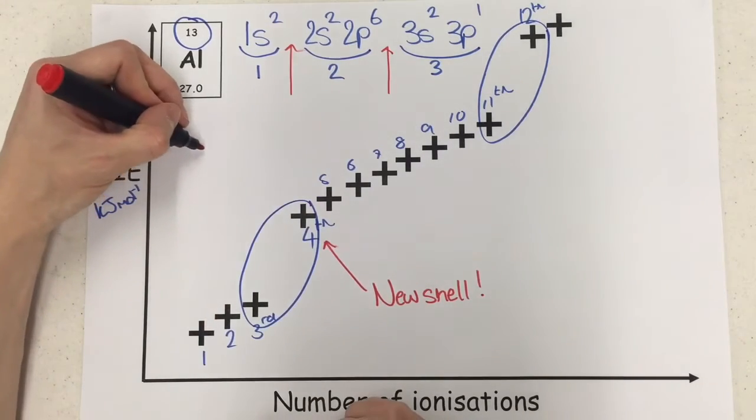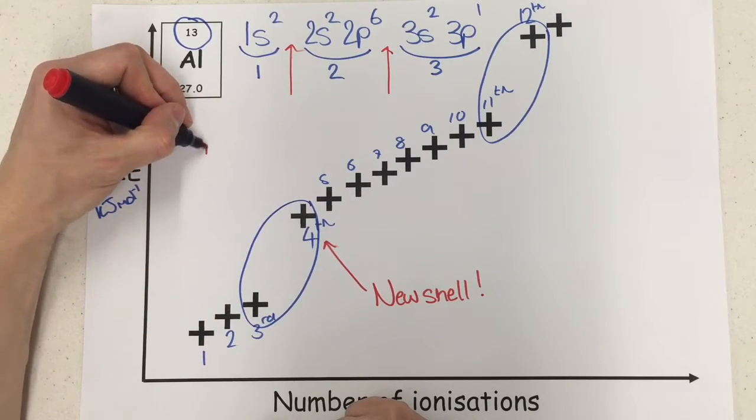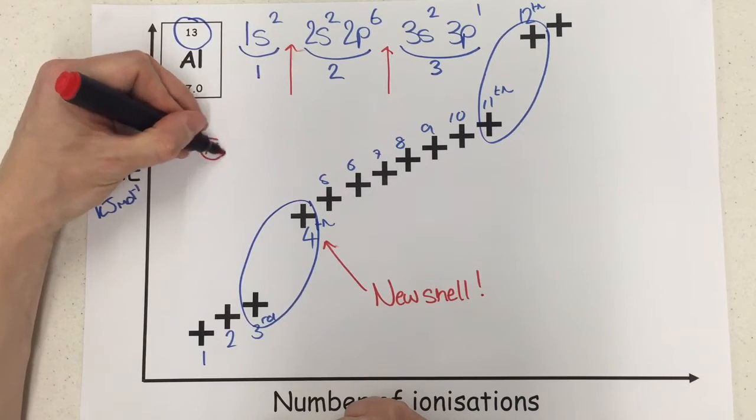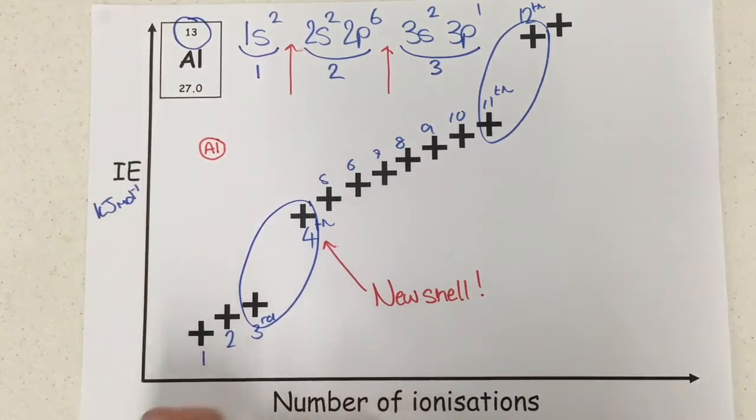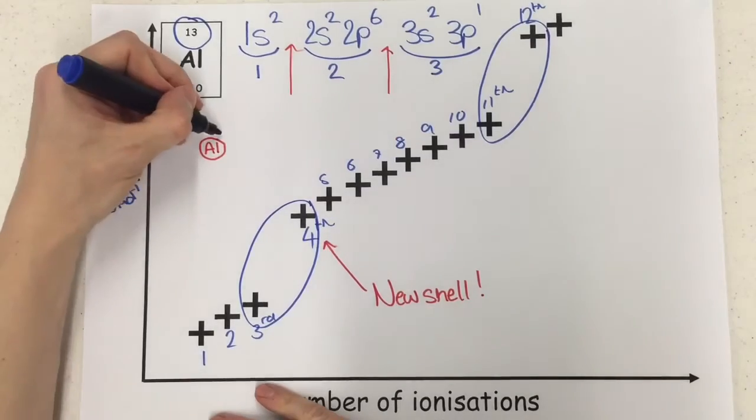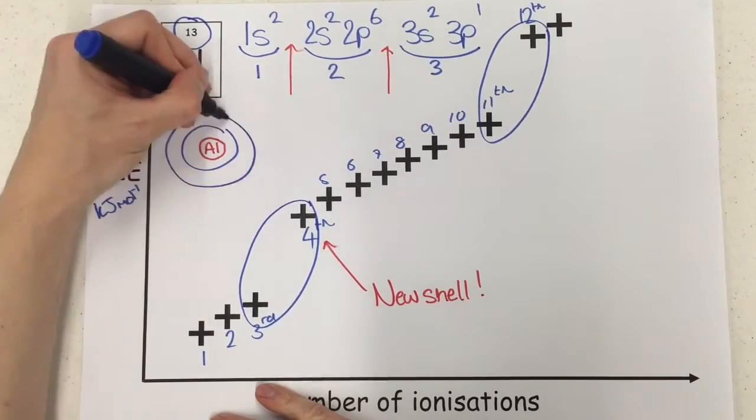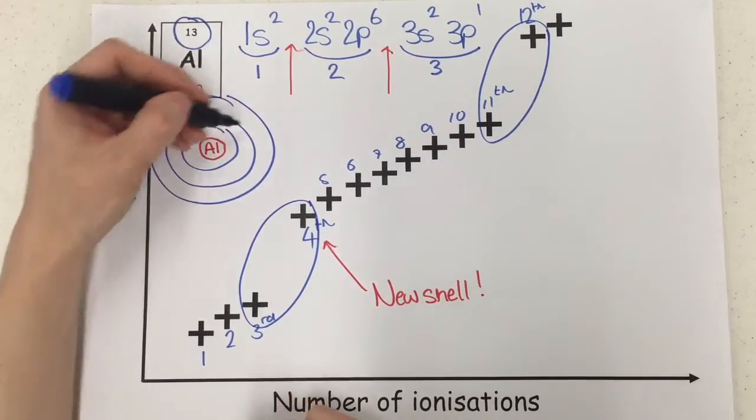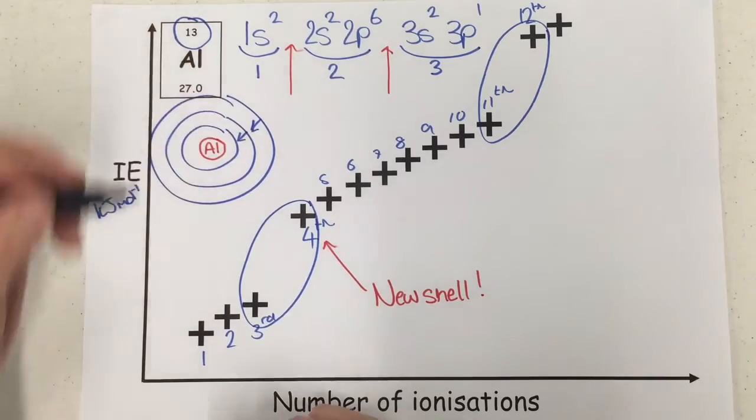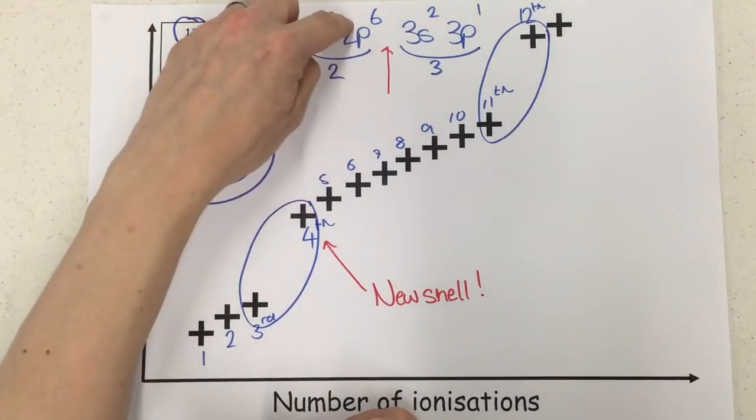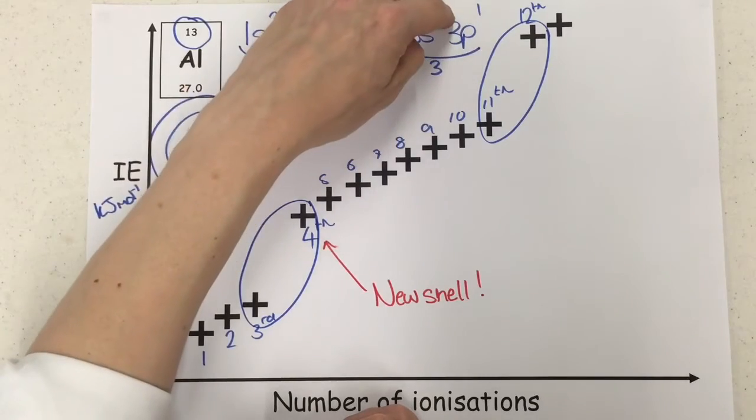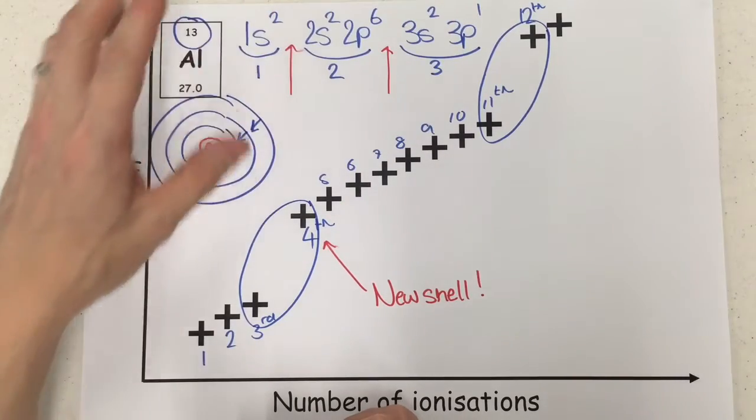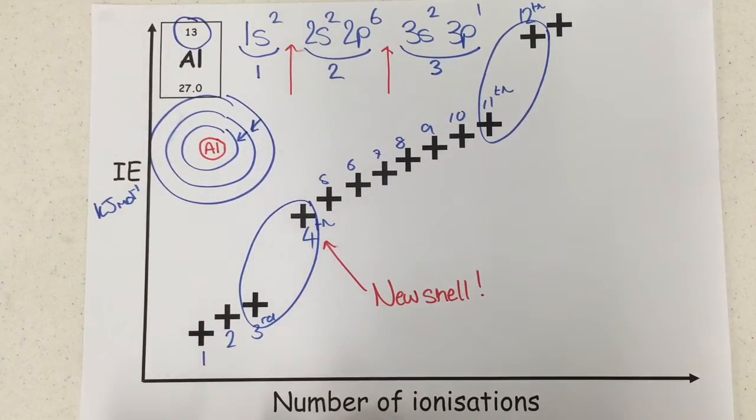Now if you think about your very simple idea of the concept of having an aluminum nucleus, and then you've got shells surrounding it, the gap between two shells is actually quite large.